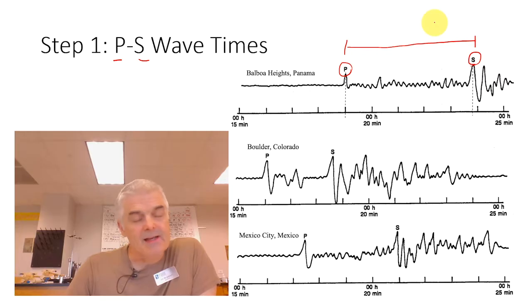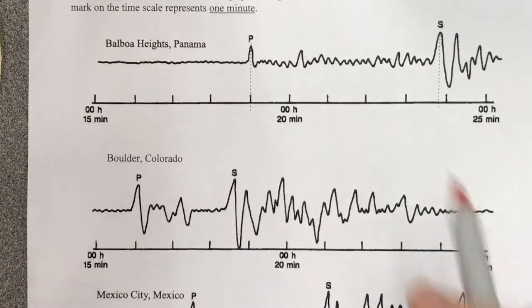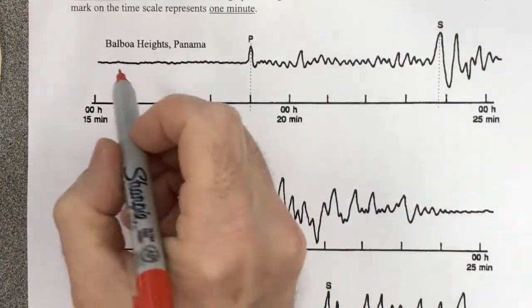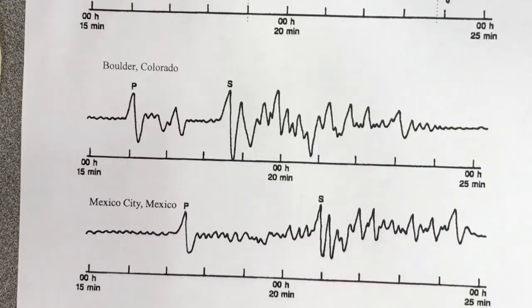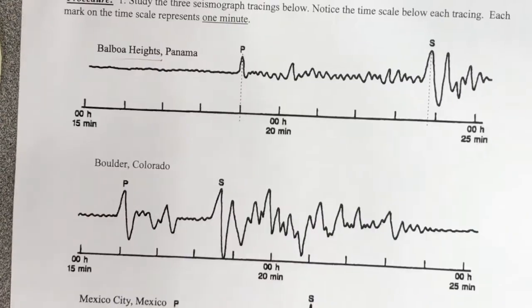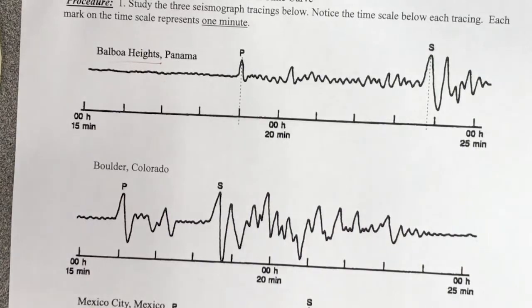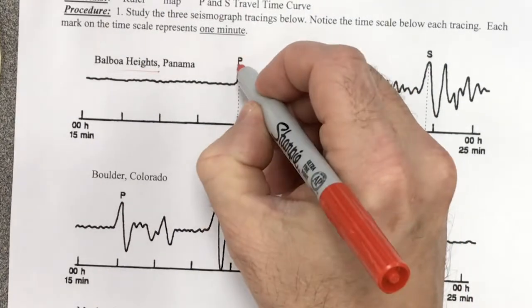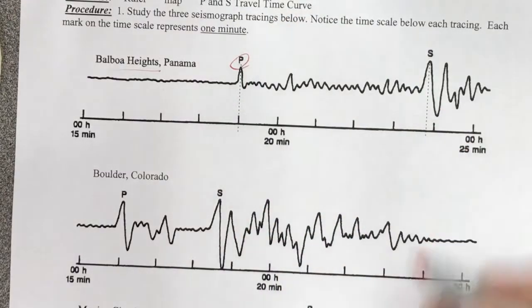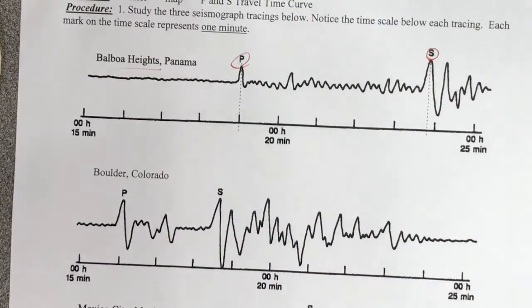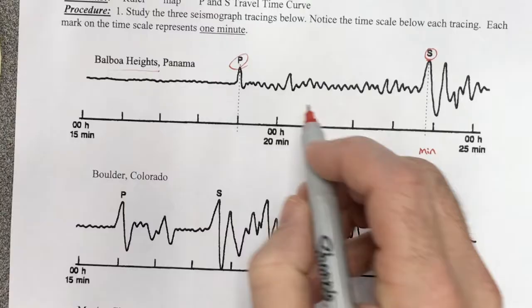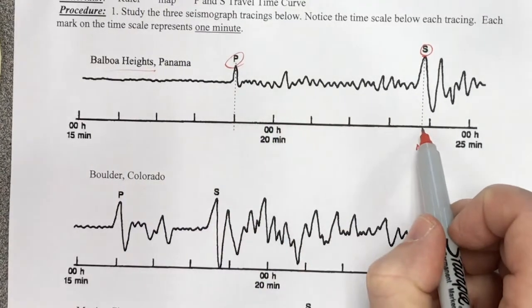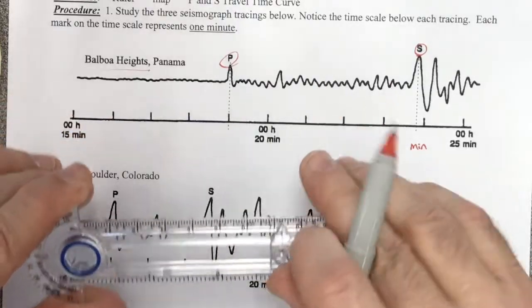So step one is, and I think what's going to work best, is I'm going to walk you through each of these steps. So how do we find the epicenter of an earthquake? Well, we have to look at these S and P waves. We have an earthquake that happened and it was measured at three locations: Balboa Heights, Panama, Boulder, Colorado, and Mexico City. And we've got different seismograph charts. The first step is to determine the number of minutes, the time between the arrival of the P wave and the arrival of the S wave.